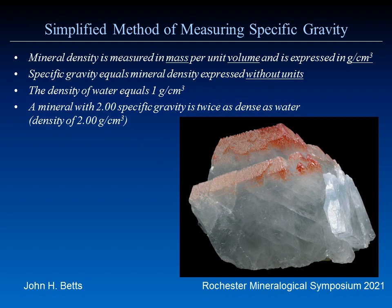This is a very useful method for identifying minerals, or at least narrowing down the possibilities. Some of you may remember the crystals sold as barite from Hamam-Zariba, Tunisia back in the 90s. They were identified as barite, but within a year it was determined that they were in fact celestine. A simple specific gravity test would have identified that difference.